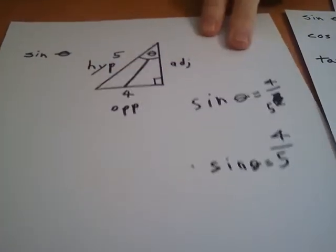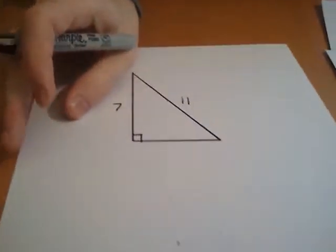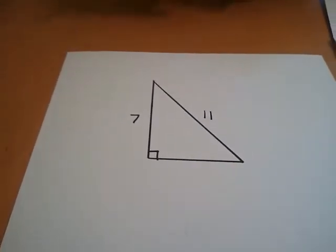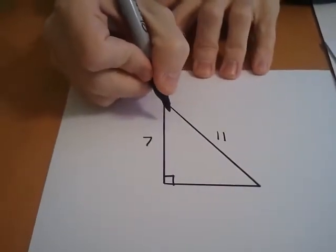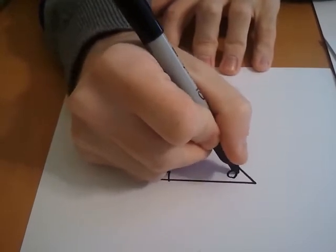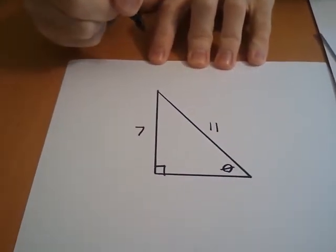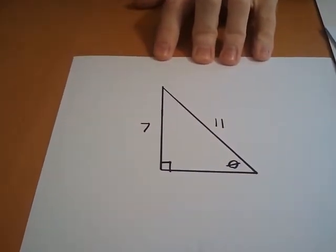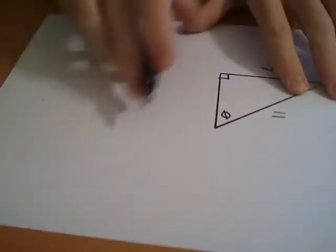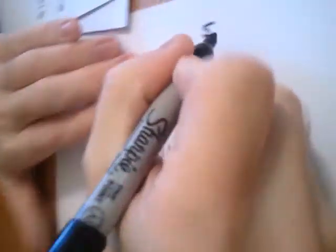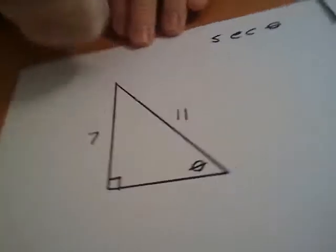Let us do one more to really get this guy down. And then you can practice. All right. So for this one here, let's say angle theta, let's put our theta right over there. And let us, for this one, let's find the secant of theta. Secant of theta.